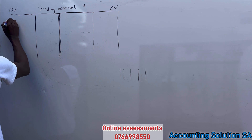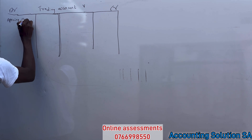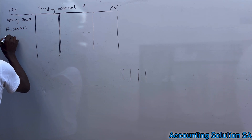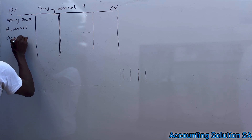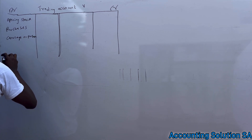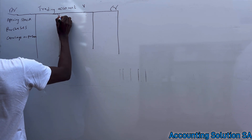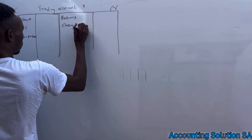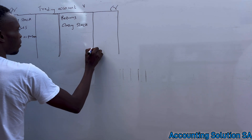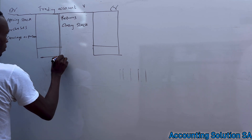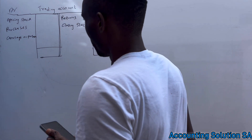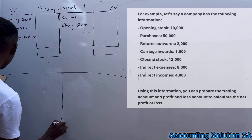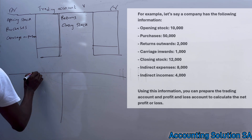On the debit side we have opening stock, we have purchases, then we have carriage on purchase, and we also have returns on this side because it's a minus — returns reduce purchases. We also have closing stock. After that we do the balancing figure, which is going to give us gross profit on this side or gross loss on the other side.